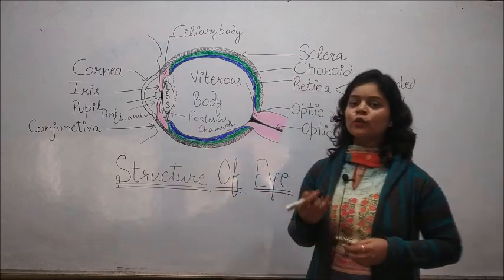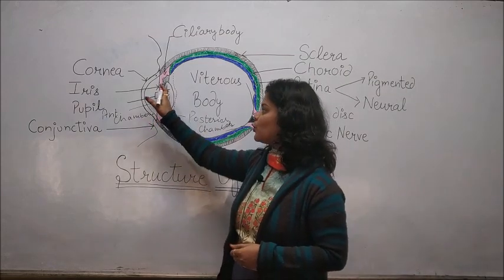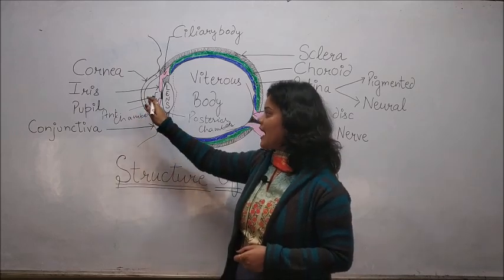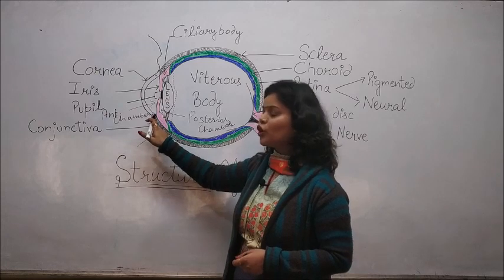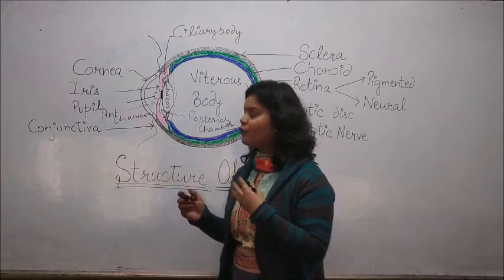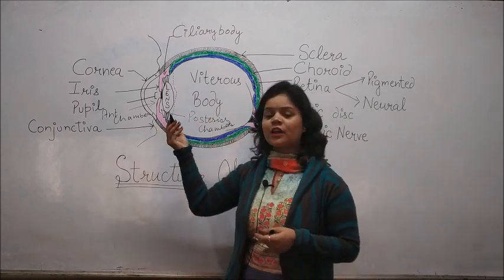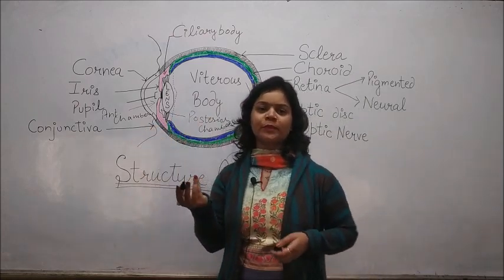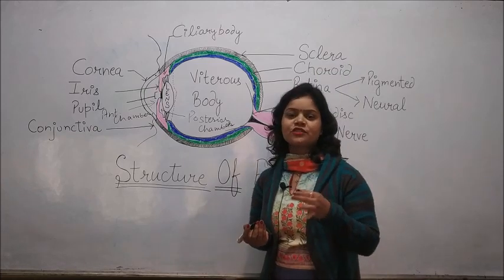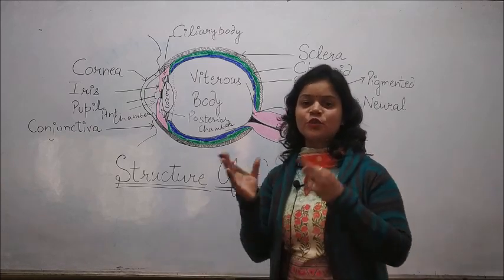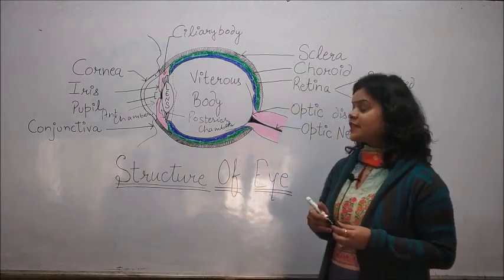The aqueous humor is produced in the posterior chamber and it overflows into the anterior chamber. At the junction of the cornea and the sclera, there is a canal of Schlem. It is an opening from where the aqueous humor is drained out. There is also one more opening that is the trabecular meshwork, which also helps to drain out the extra aqueous humor and it helps to maintain the intraocular pressure of the eye.